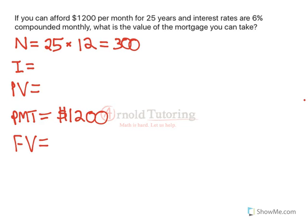Now the interest rate. The key is that we need to enter it at the same frequency for which it's compounded. The language here is 6% compounded monthly — that means 6% per year compounded monthly — so we're going to divide it by 12. That means it's essentially 0.5% each month. It'll actually end up being more than 6% over the course of the year because it compounds each month. We want to put this on the same basis as the number of payments, so 0.5% is what you'll enter.